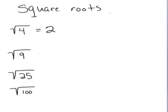And then for the square root of 9, I need some number that when I multiply it times itself, it's 9. Well, that's 3, because 3 times 3 is 9.